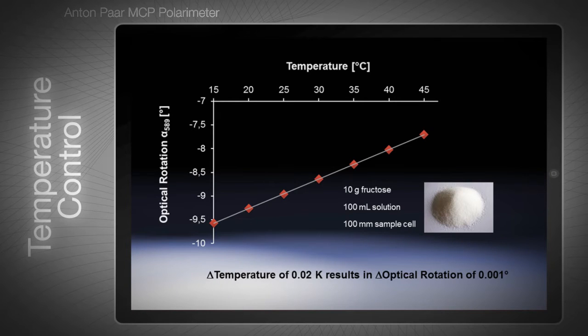For a sample of 10g fructose in a 100ml solution, for example, a temperature variation of just 20 mK changes the optical rotation by 0.001°. This is 10 times the MCP's resolution in optical rotation, so it is crucial to have the temperature precisely under control.